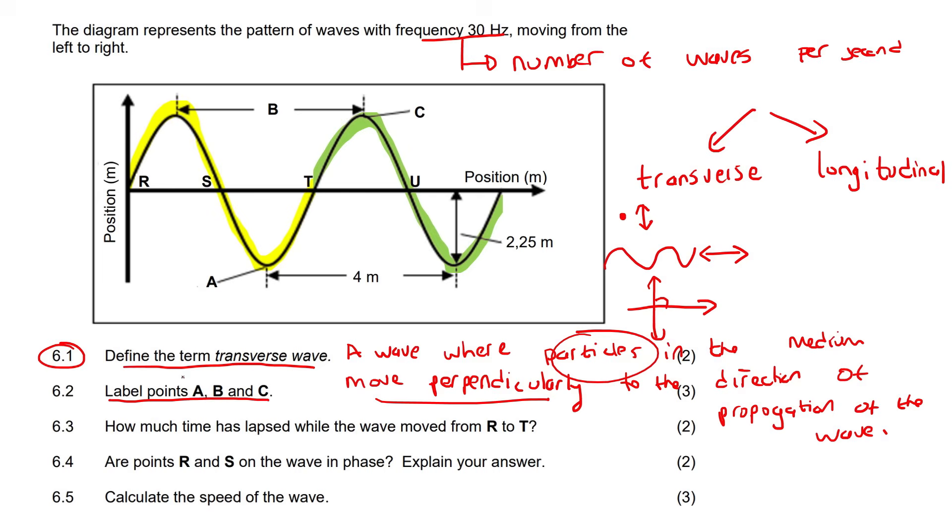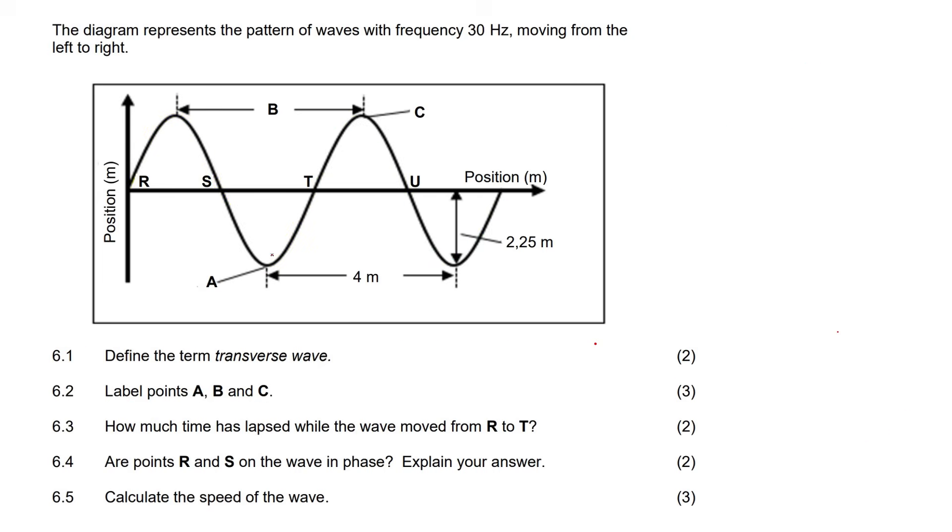Now it says label points A, B, and C. We know that A is the bottom and C is the top. When life gets rough, you feel like you're in the trough. So A is going to be a trough. The one at the top is the crest. And then B - B is going from the same position to the same kind of position. We call that a wavelength. So B is the wavelength.